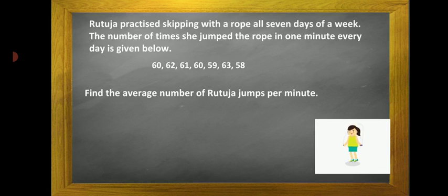Let us see one more example. Rutuja practiced skipping with a rope all seven days of a week. The number of times she jumped the rope in one minute every day is given below: 60, 62, 61, 60, 59, 63, 58. Find the average number of Rutuja jumps per minute.